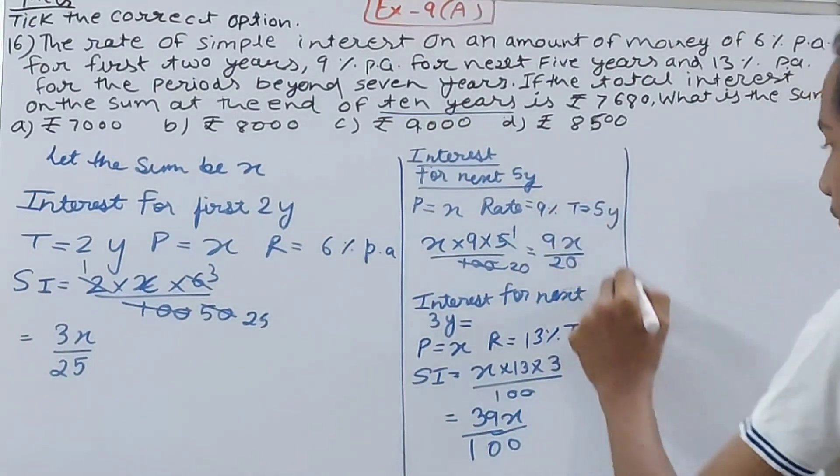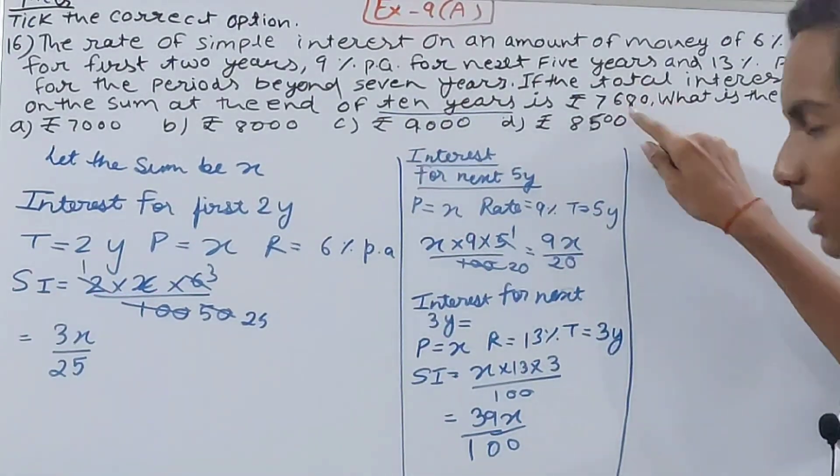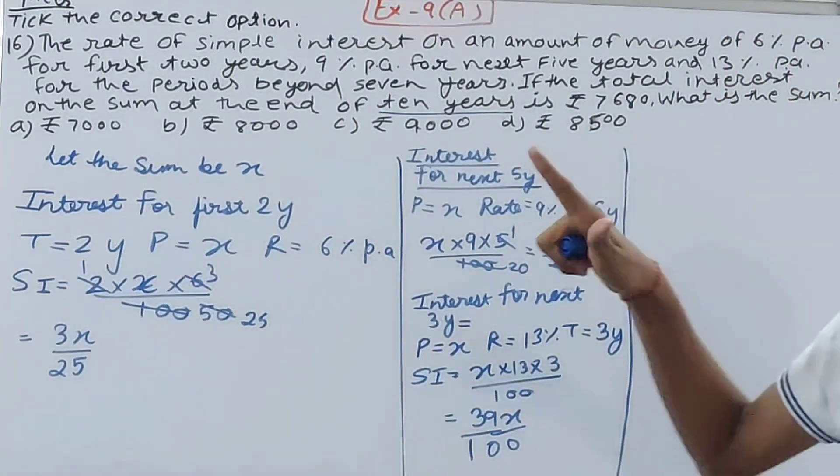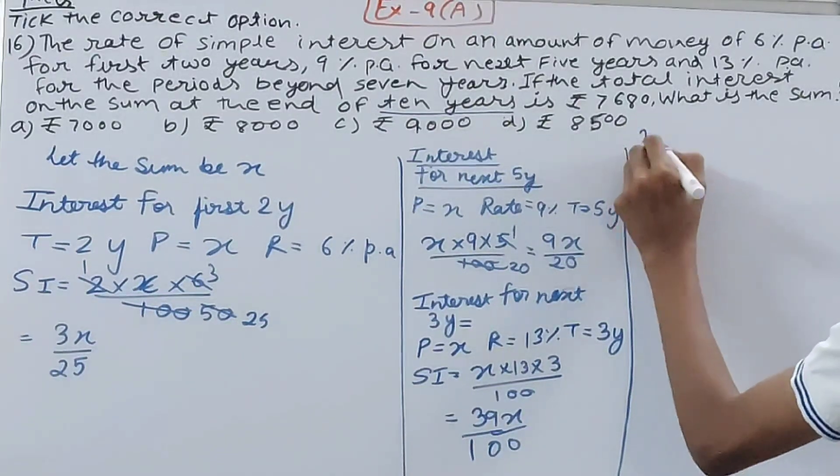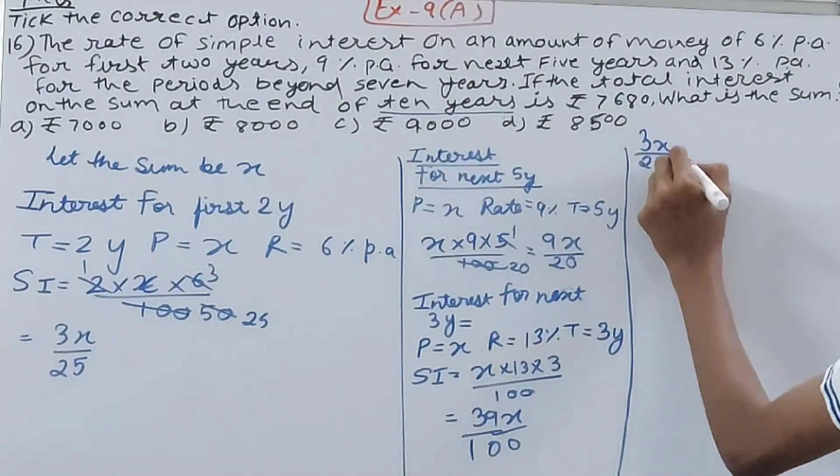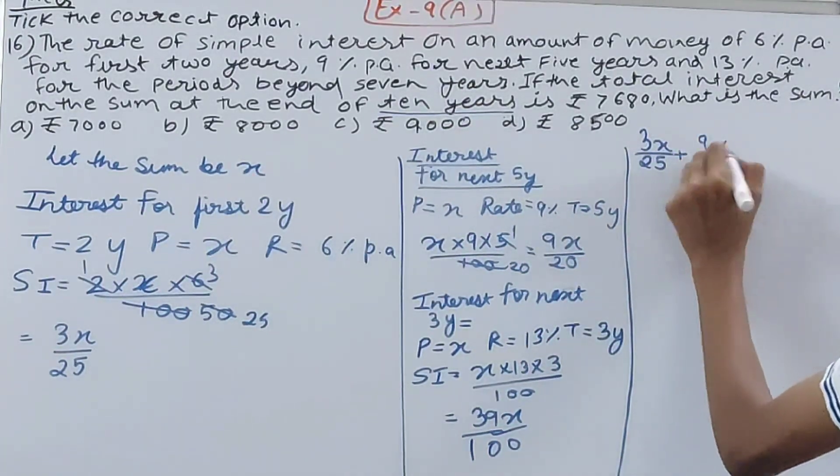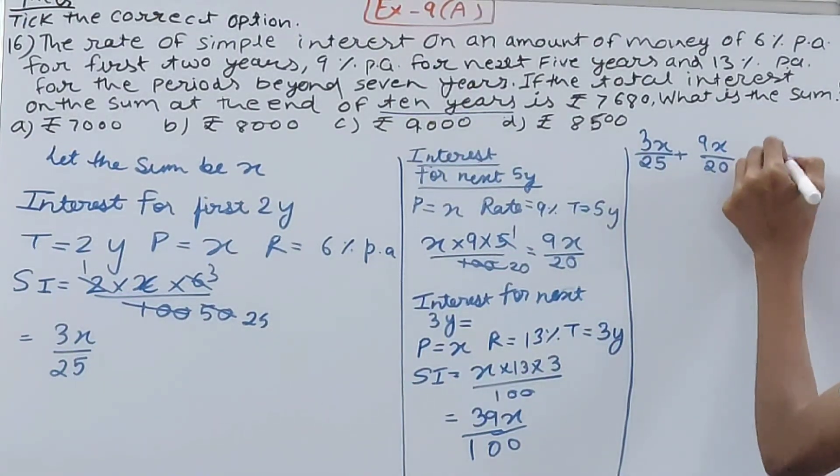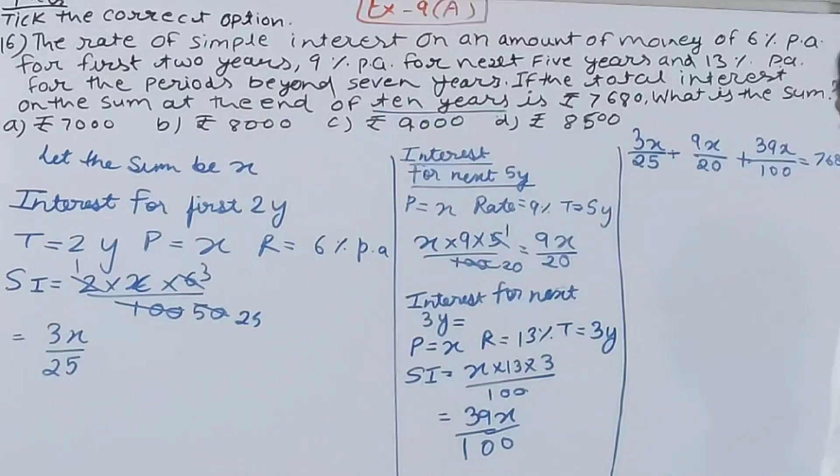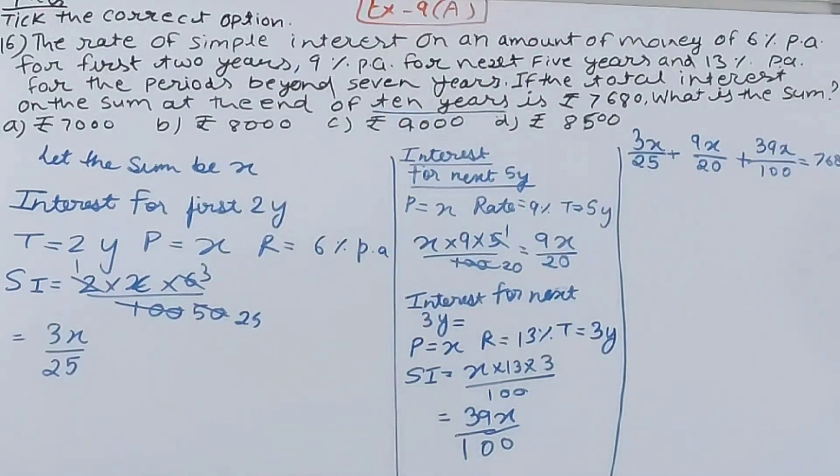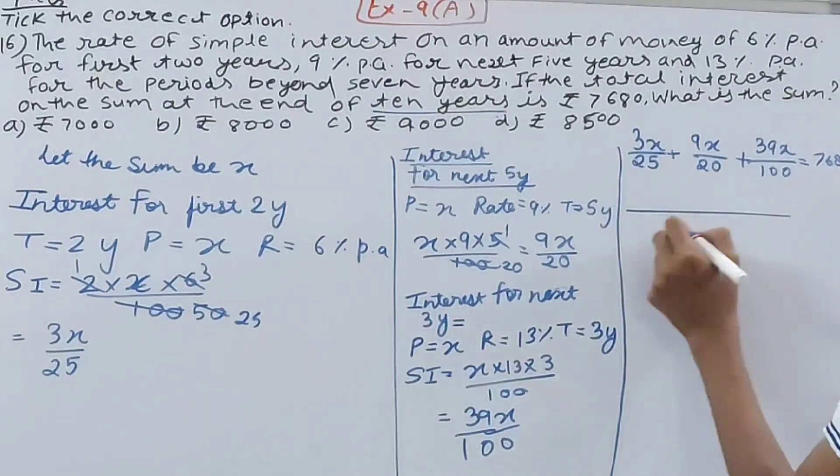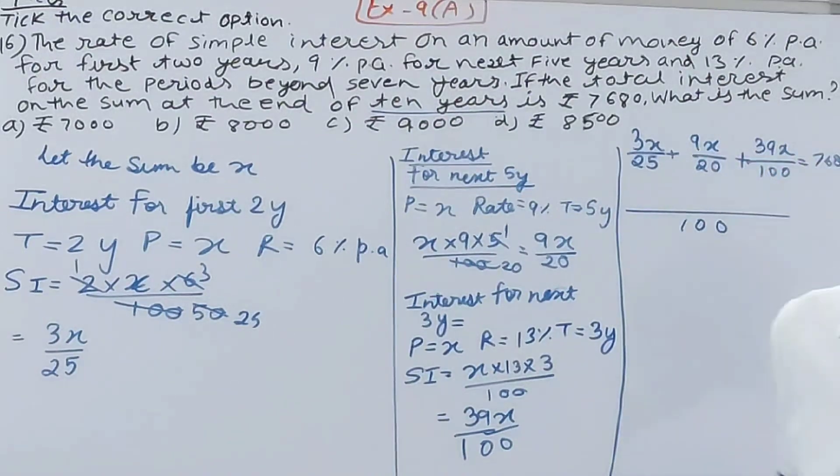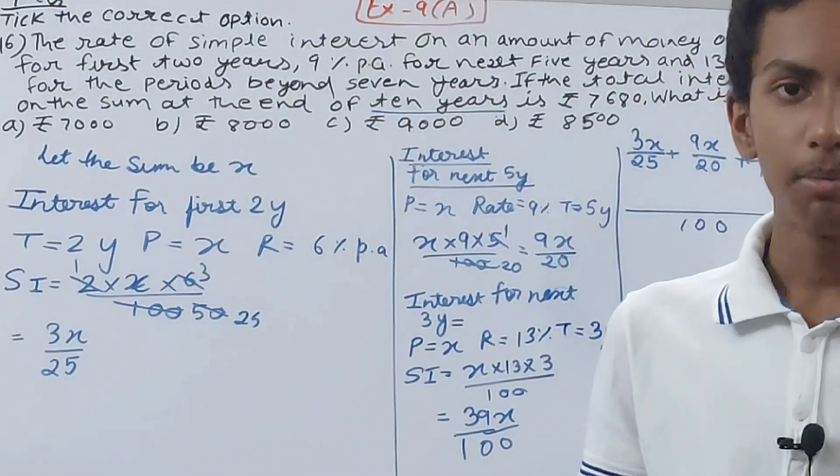So all this we have calculated. Now see, the total interest after adding all these is 7680. So let's do that: we have 3x by 25 plus 9x by 20 plus 39x by 100. The LCM of 25, 20, and 100 is 100 only, right? Because 25 times 4 is 100 and 20 times 5 is 100, but no other number is common.